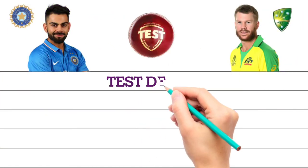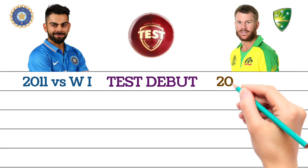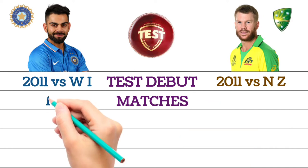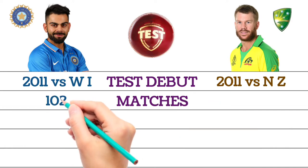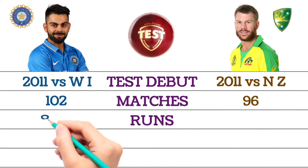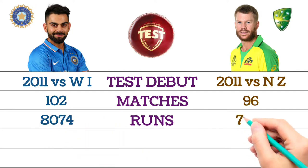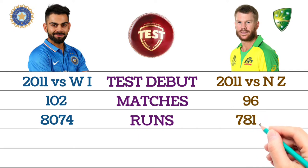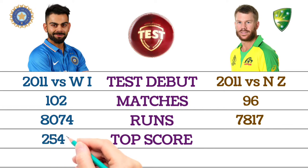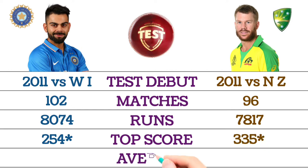Test career: Test debut — Virat Kohli debuted against West Indies in 2011, David Warner debuted against New Zealand in 2011. Total matches: Virat Kohli 102 matches, David Warner 96 matches. Total runs: Virat Kohli 8,074 runs, David Warner 7,817 runs. Top score: Virat Kohli 254 not out, David Warner 335 not out.